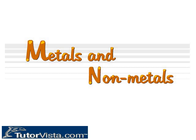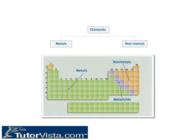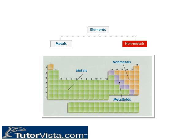Metals and Non-Metals. Elements can be classified as metals and non-metals on the basis of their properties. Only 17 elements in the periodic table are generally considered non-metals, compared to over 80 metals.